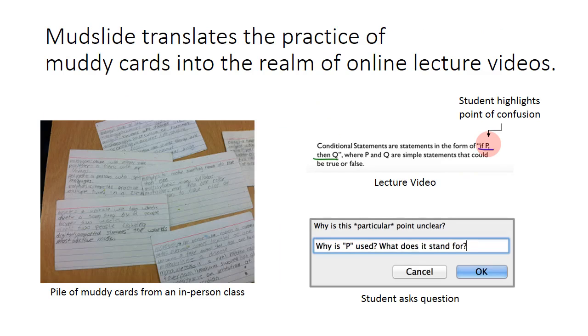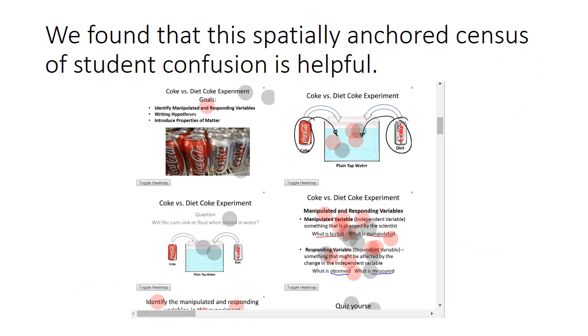Students can highlight points of confusion in the lecture video and ask teachers a question about it. We found that this spatially anchored census of student confusion is helpful for both teachers and students.